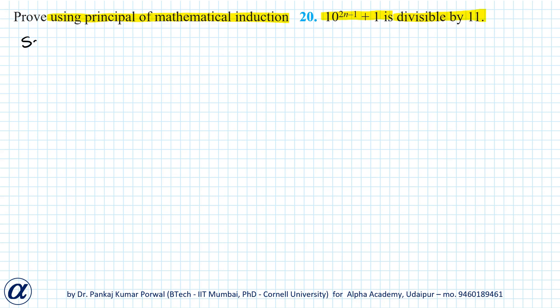To show that, first we have to check P(1), and I can get the statement for P(1) by substituting n equals to 1 in the given expression. So I get 10 to the power 2 into 1 minus 1 plus 1 is divisible by 11.